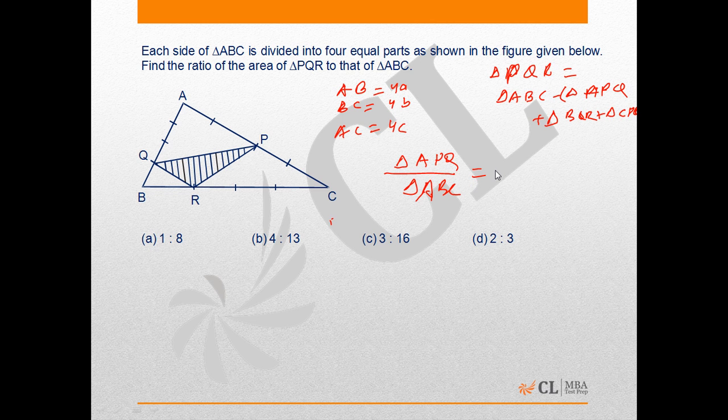The ratio is AQ into AP upon AB into AC. This is because angle A is common between the two triangles, which means sine of this angle will get cancelled out as the area of a triangle with two sides given and angle between them is involved.